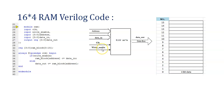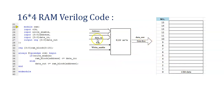Else if write_enable is 0, the RAM will perform a read operation. Instead of writing, we now want to read the data from a particular memory location and output it. So data_out is assigned the value of ram_block at the given address — for example, if address is 1000 (8), whatever data is stored at that memory location will appear on data_out. The always block ends with 'end' and the module closes with 'endmodule'.